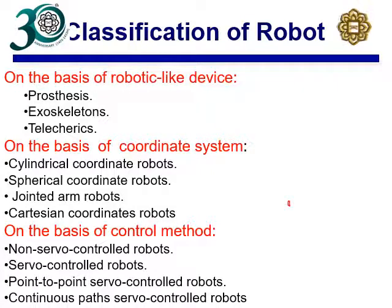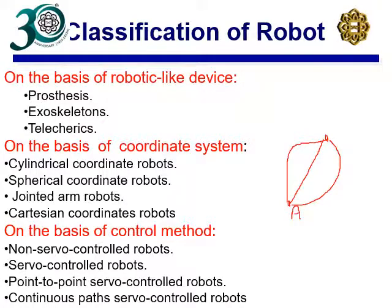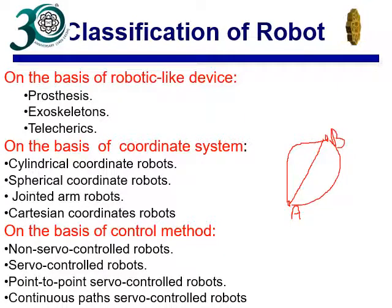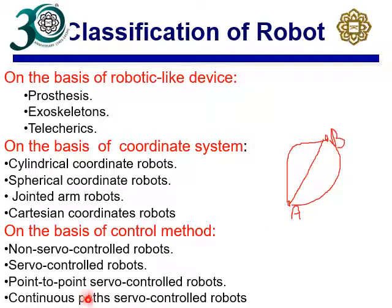Point-to-point motion means the end effector can move different ways between point A and point B — it doesn't matter which path. But if you would like continuous path servo control, you have to define a specific path from point A to point B, whether it's a straight line or a curved path. Advanced robots are all equipped with servo control motors, usually AC servo motors.